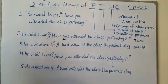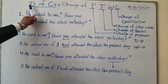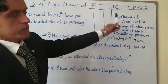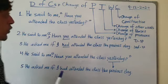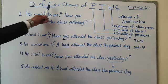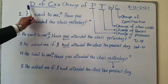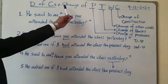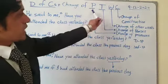This formula is basically made up of two steps. Step number one: D of C's — where D stands for deletion and C's stands for commas, so D of C's means deletion of commas. Step number two: Change of PTWC.